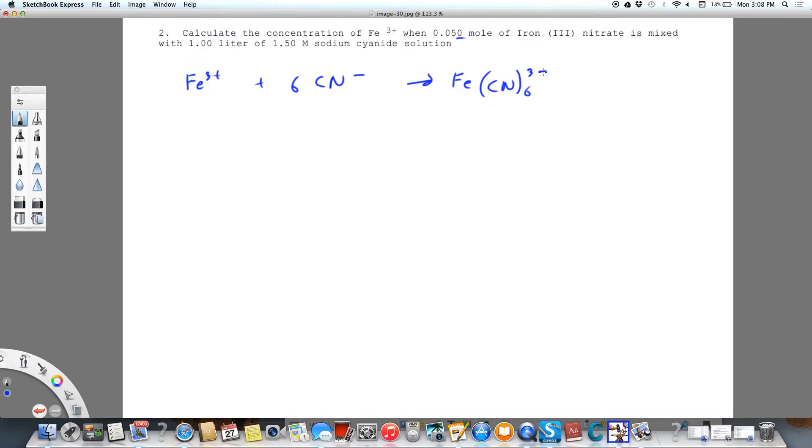One thing we need to remember is that iron-3 will react with six cyanide ions to form this complex. So the first thing we want to do is figure out how much of this complex actually forms. We're going to call this first step complex formation.